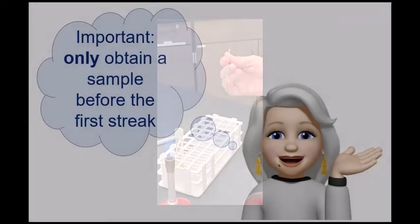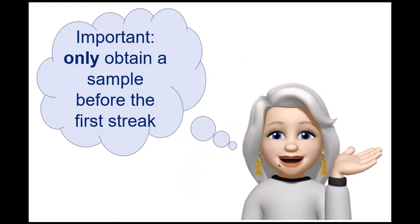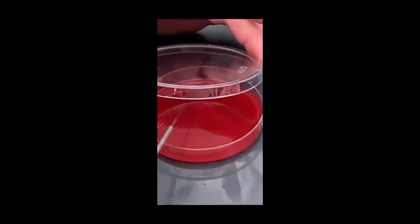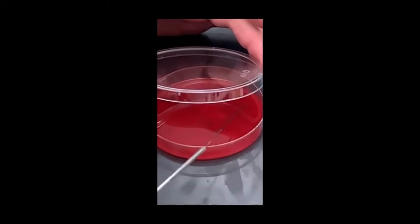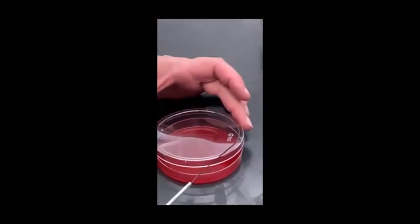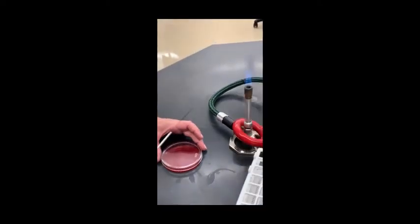This is the only time you will go into that sample. Put it aside. You won't need it again. Now spread the sample over the first quadrant using close parallel streaks. Be sure not to gouge the agar. You just want to spread it on the surface of the agar.